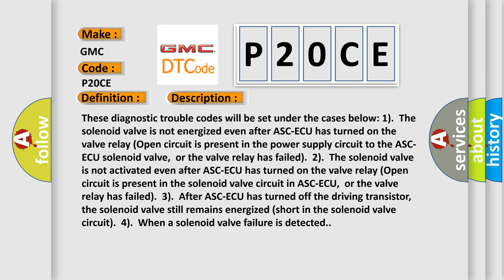Case 2: The solenoid valve is not activated even after ASCAQ has turned on. A valve relay open circuit is present in the solenoid valve circuit in ASCAQ, or the valve relay has failed. Case 3: After ASCAQ has turned off the driving transistor, the solenoid valve still remains energized — a short in the solenoid valve circuit — when a solenoid valve failure is detected.